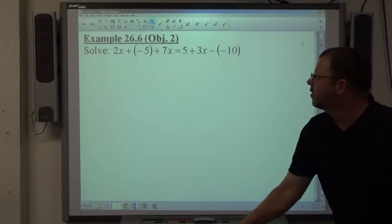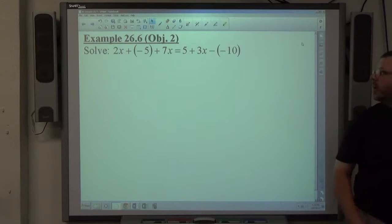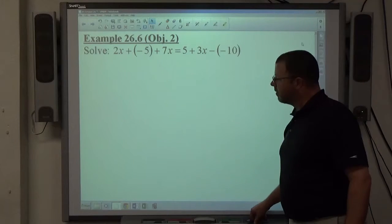Okay, our last example, 26.6, it says solve 2x plus negative 5 plus 7x equals 5 plus 3x minus negative 10.